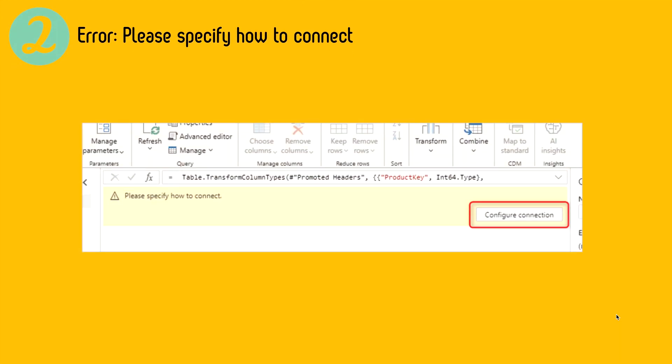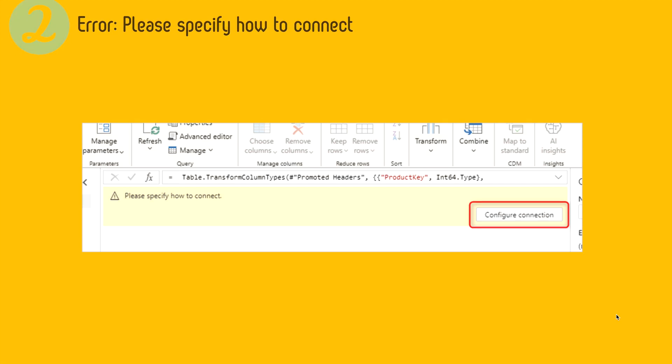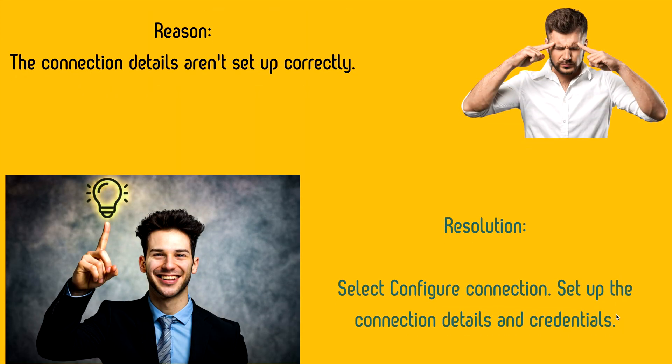Next: 'Please specify how to connect.' This problem happens when you are connecting to a data source but haven't set up the credentials or connection details yet — it commonly occurs when you migrate queries into a data flow. The reason is the connection details aren't set up correctly. The resolution is straightforward: select Configure Connection, set up the connection details and credentials, and you're done.